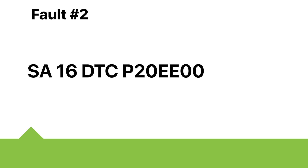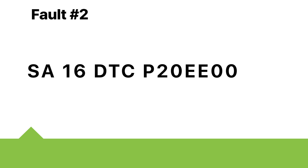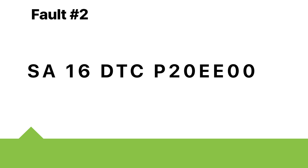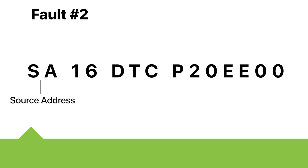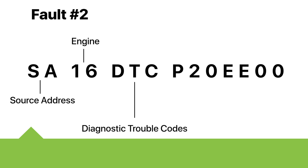Fault number two: SA16 DTC P20EE00. SA stands for source address. In this particular example, the 16 stands for the engine, so this fault code is coming from the engine ECU. DTC stands for diagnostic trouble code.